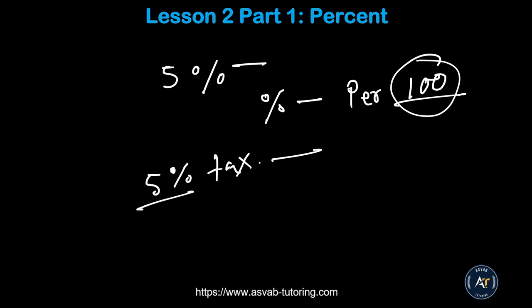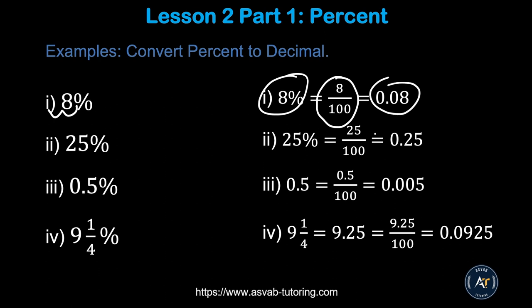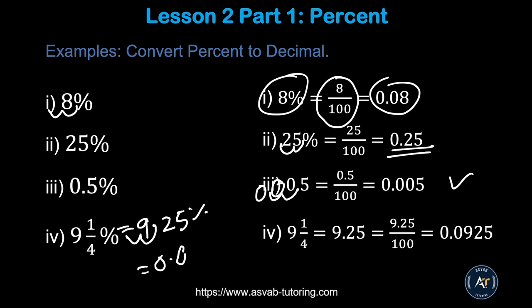Now, how to convert from percent to decimal. You have to divide by 100. You can see here: 8% equals 8 over 100, which gives you 0.08. Another way: move two decimal places to the left — one, two — giving you 0.08. For 25%, move two decimal places: 0.25. For 0.5%, move two places and fill with a zero if needed, giving you 0.005. For nine and a quarter percent (9.25%), move two decimal places: 0.0925.